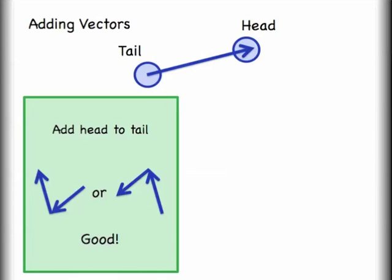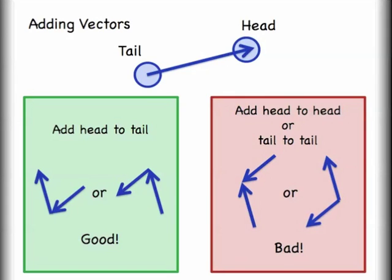This is what it looks like to add vectors head to tail and you can see that the head of one vector is on the tail of another. I'm showing two examples of this. If you're trying to add the two vectors together, then you cannot have the head of one vector touch the head of another, or you cannot have a tail touch another tail.